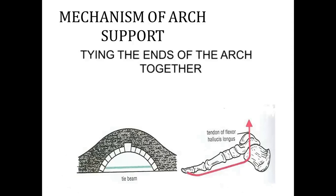Continuing with the mechanism, these ends are tied together with the help of tendons or ligaments — what we call a tie beam. Here in the diagram, we can see the tendon of flexor hallucis longus tying from one end to another end.